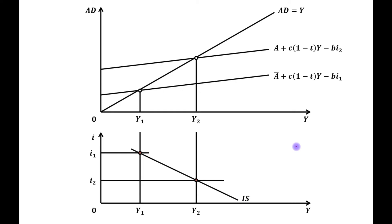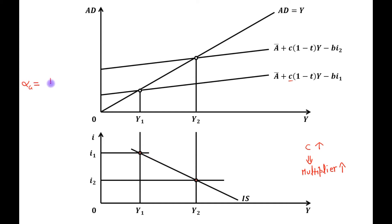Now suppose that MPC increases. Due to the increase in MPC, the multiplier will be increased. We know that the multiplier is denoted by alpha G and it is equal to 1 upon 1 minus C(1 minus T). So if the value of MPC increases, the value of the multiplier will be increased.